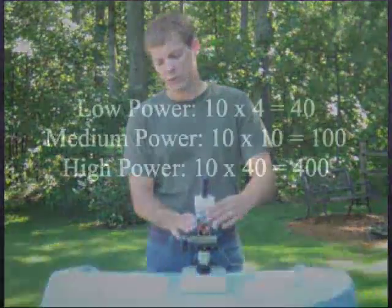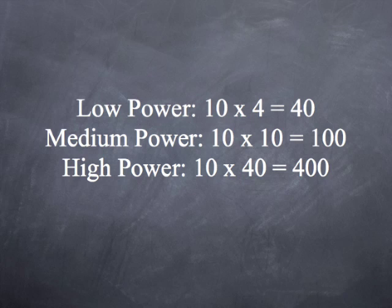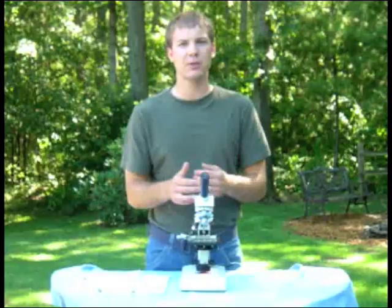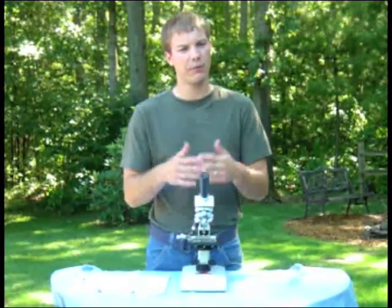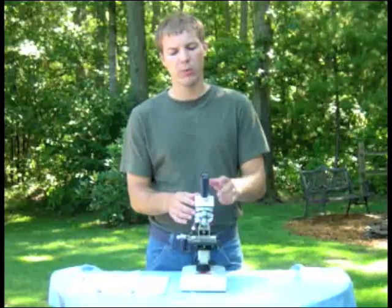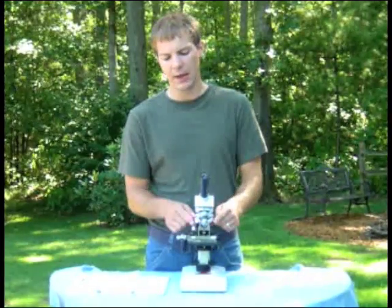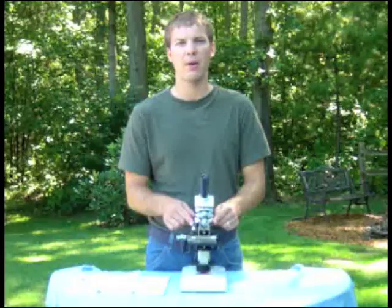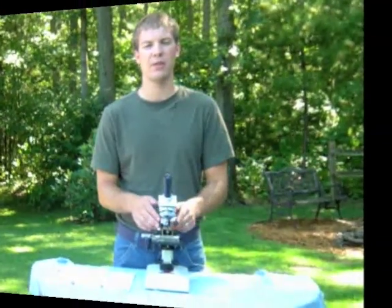So we have 10X times 4 equals 40 — total magnification. 10X times 10 equals 100 — total magnification. And 10X times 40 equals 400 — total magnification. So if you're asked what the total magnification of your sketch or drawing is, you want to multiply the eyepiece times whatever lens you're using. That will give you the total magnification.